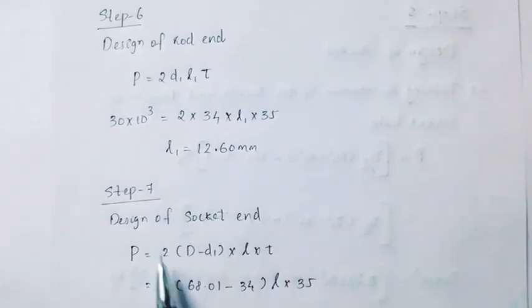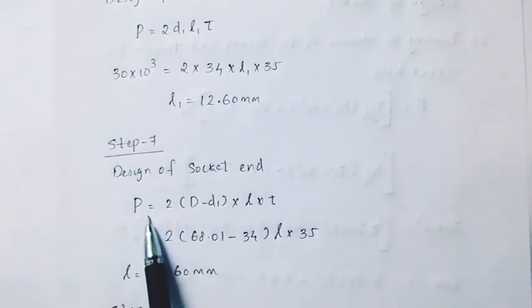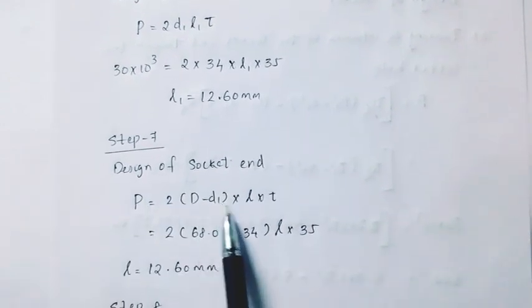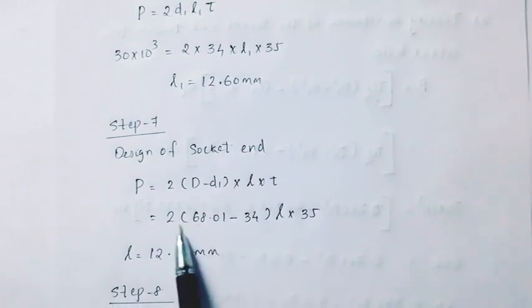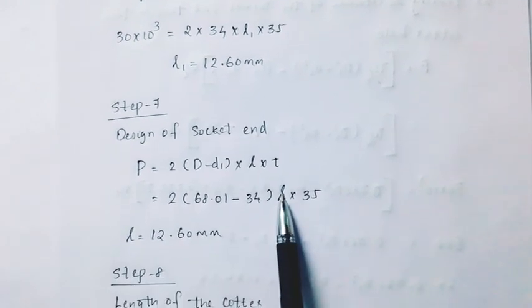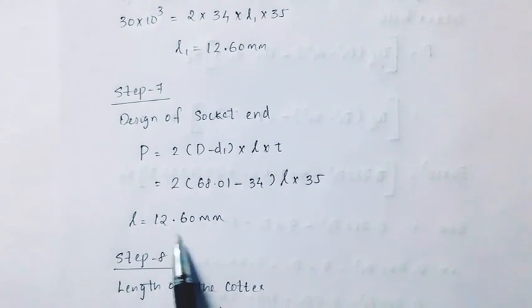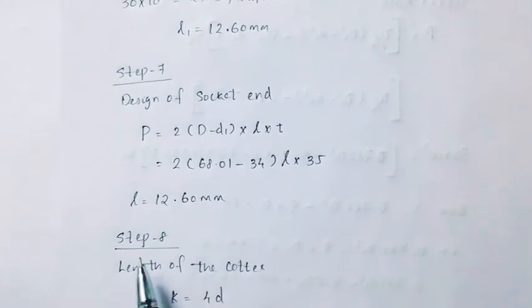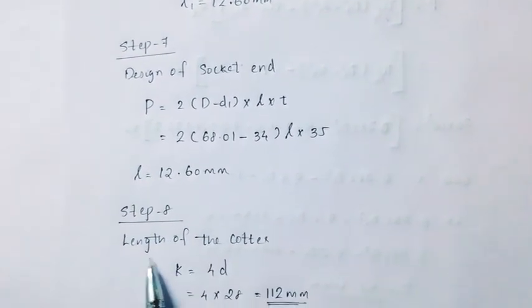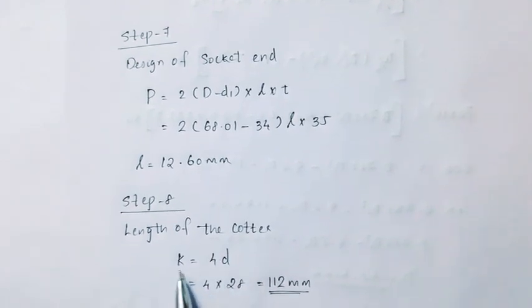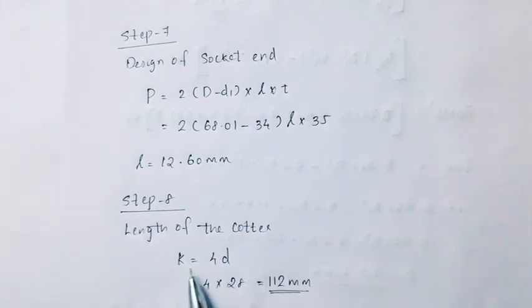Step 8: Design of the socket end. P equals 2 into D1 into L into tau. L equals 12.60 mm. The length of the cotter equals 4 into D plus 2 into L1.